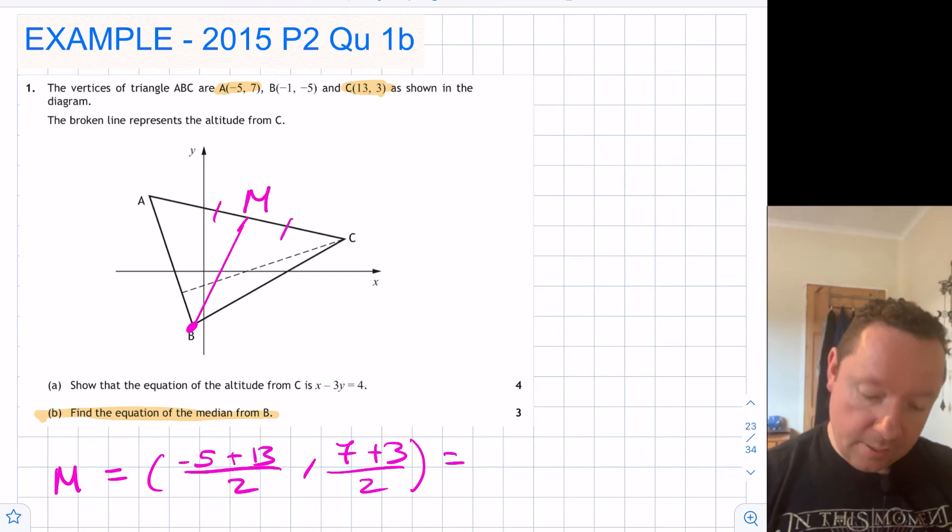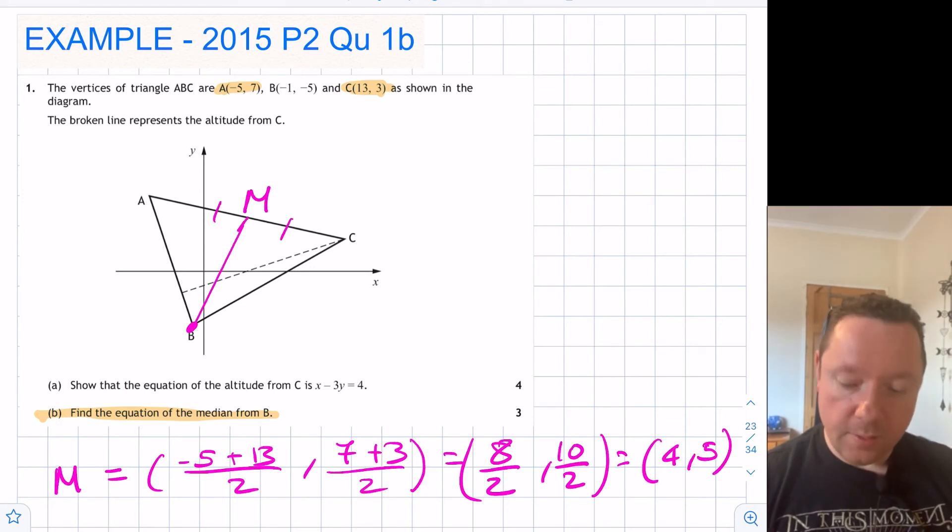13 minus 5 is 8, so that's 8 over 2, and it's 10 over 2. So that is (4, 5). There's our midpoint.